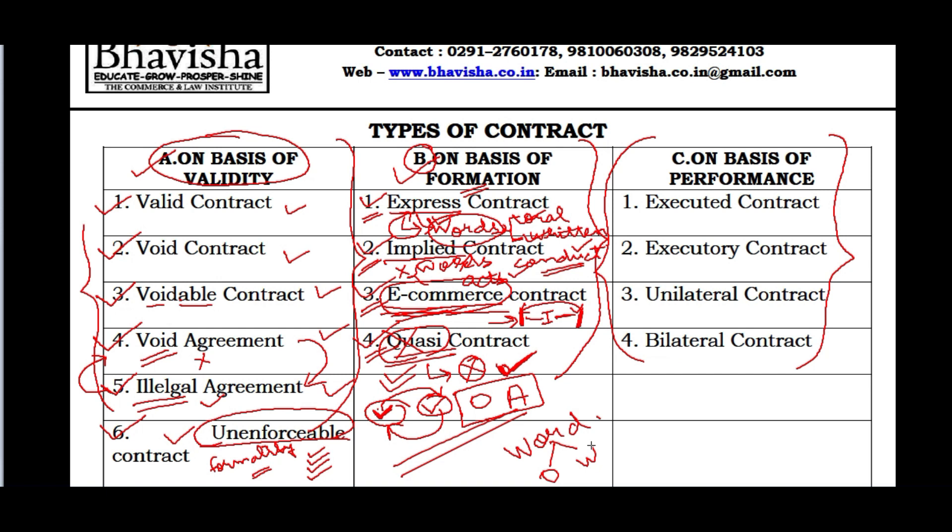The next type on the basis of formation was e-commerce contract, where two parties come to the same level through different networks. The example was purchasing on Amazon or Flipkart through emails or electronic data interchange platforms. Contracts formed through mouse clicks in this manner are called e-commerce contracts, where contracts are made through electronic commerce.